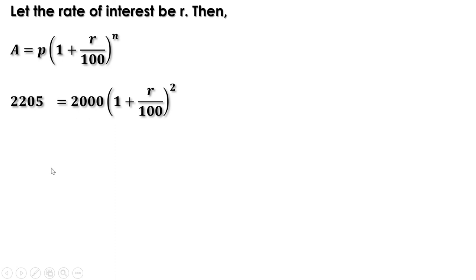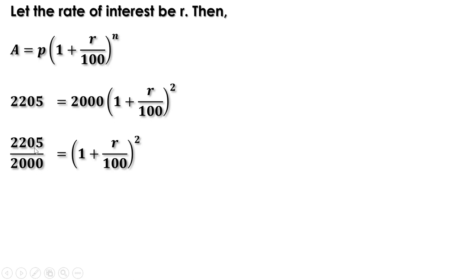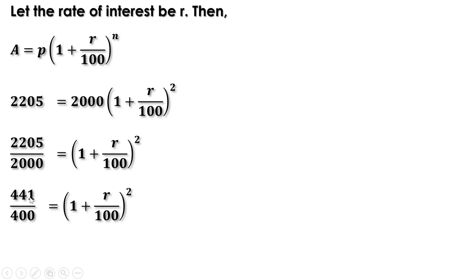Taking 2000 to the other side: 2205/2000 = (1 + r/100)². Dividing both by 5: 441/400 = (1 + r/100)². Taking square root on both sides: √441 = 21, √400 = 20, so 21/20 = 1 + r/100.